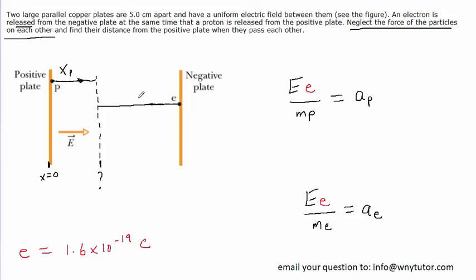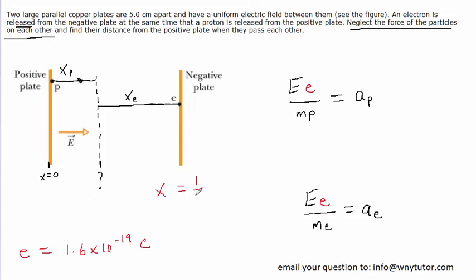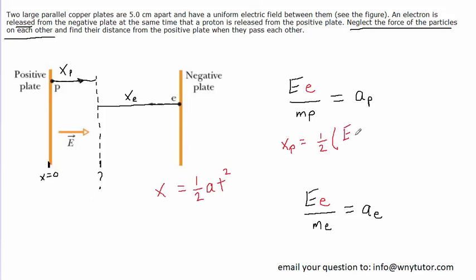The proton travels a distance we call x-p, and the electron travels a distance we call x-e. From kinematics, the position of a moving particle equals its initial velocity multiplied by time, plus one-half times its acceleration times time squared. Since both particles are released from rest, the initial velocity is zero, eliminating that term. The equation simplifies to one-half times acceleration times time squared. For the proton, x-p equals one-half times its acceleration — which is the electric field times the elementary charge divided by the mass of the proton — times time squared.